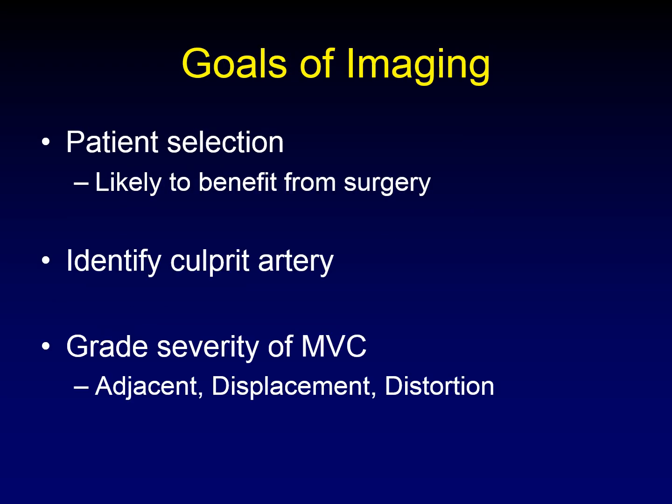What are the goals of imaging when preparing for microvascular decompression? We want to select patients most likely to benefit from surgery — those who definitively have contact between an offending artery and the injured nerve. We want to identify the culprit artery, since it can vary. We also want to grade the severity of microvascular compression. The categories — besides no contact — are adjacent, displacement, and distortion.